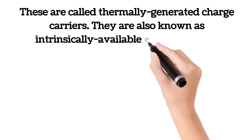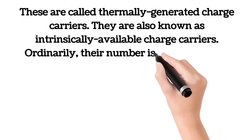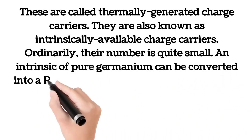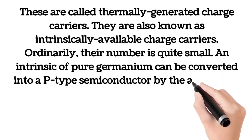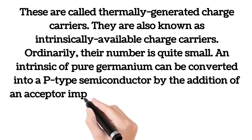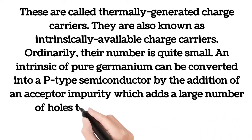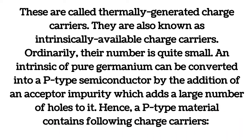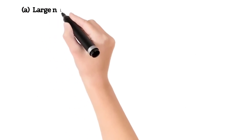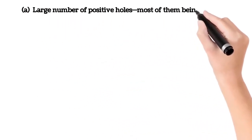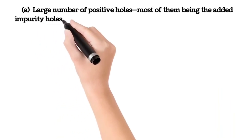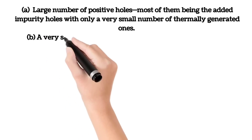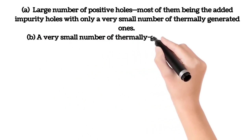Ordinarily, their number is quite small. An intrinsic or pure germanium can be converted into a P-type semiconductor by the addition of an acceptor impurity, which adds a large number of holes to it. Hence, a P-type material contains the following charge carriers: a large number of positive holes — most of them being the added impurity holes with only a very small number of thermally generated ones — and a very small number of thermally generated electrons, the companions of the thermally generated holes mentioned above.